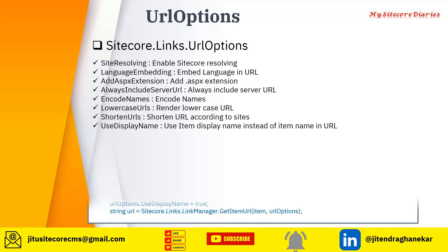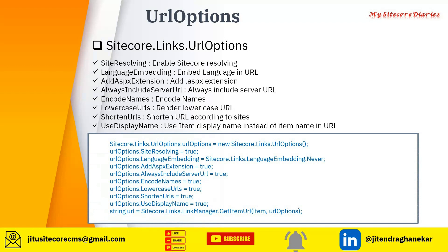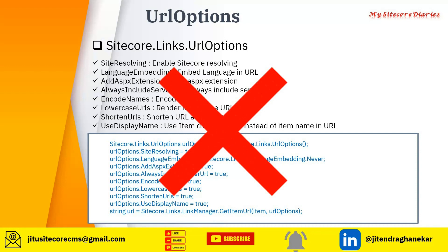This is how you use URL Options: you define a URL Options object, set all those property values, and pass it as a parameter to GetItemURL. Whatever options you set will get applied to the URL — for example, if you set language embedding to true, the language is added; if you set add aspx extension to true, the .aspx extension is added. However, if you are using the latest version of Sitecore, URL Options is now obsolete and Sitecore has provided another class you should be using instead.